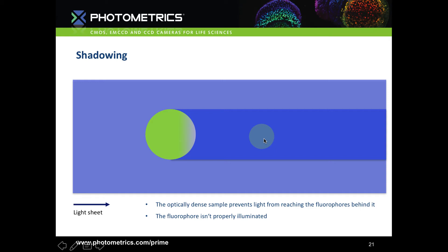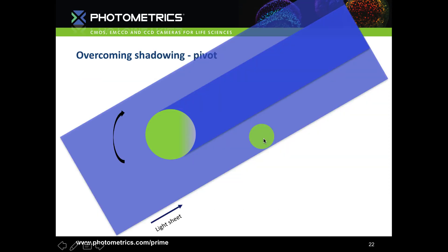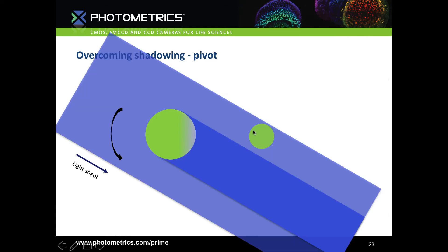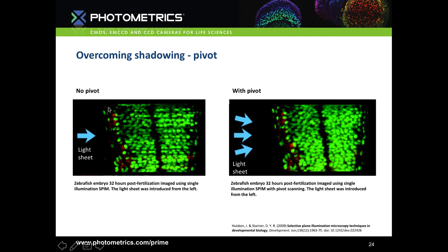Lightsheet microscopy gives us the ability to do something about shadowing with what we call multi-view lightsheet. One method is to use a pivot scanner to rotate the lightsheet up and down to allow illumination to penetrate behind optically dense structures. Using the pivot scanner the lightsheet is pivoted up and then down, so fluorophores behind optically dense structures become illuminated. Going back to the zebrafish embryo image, there's now almost no shadowing present on the pivoted image.